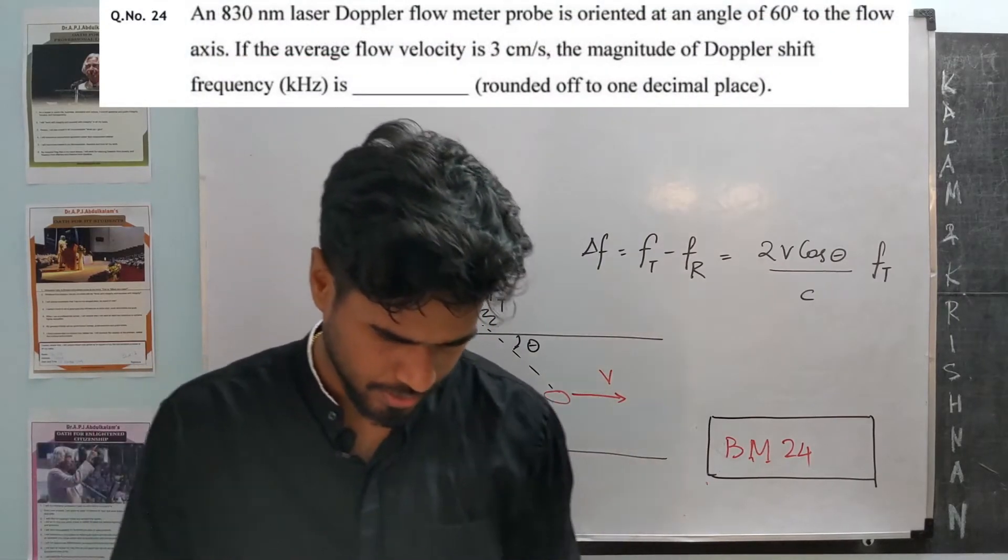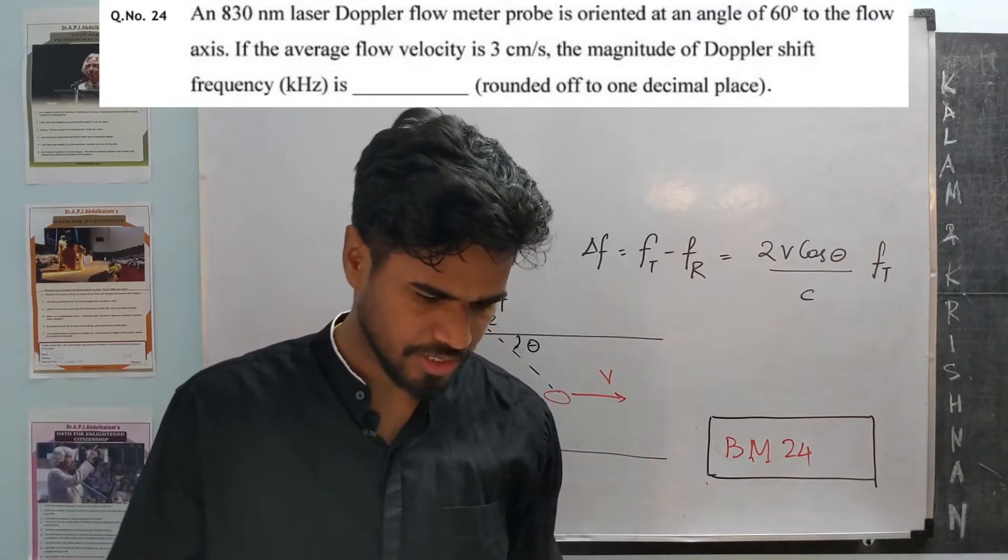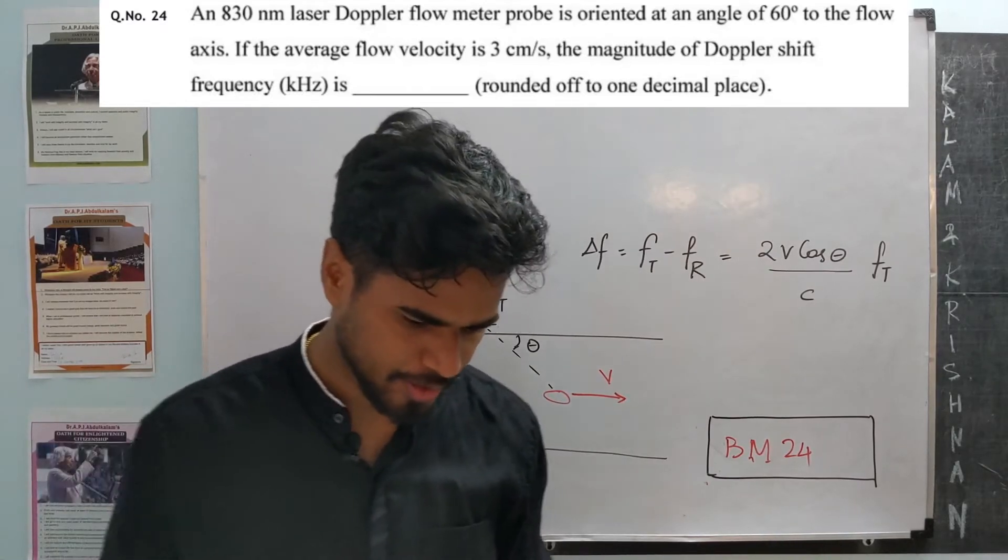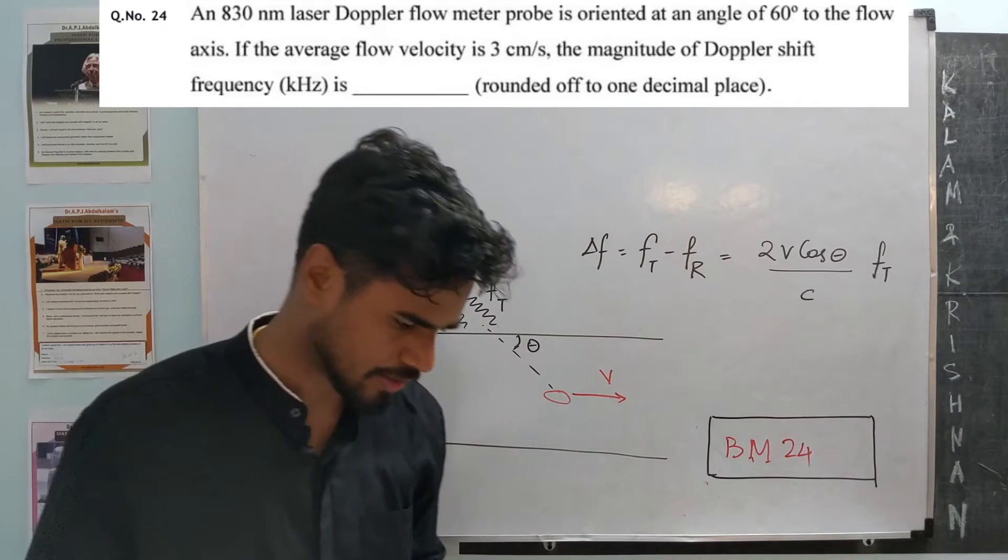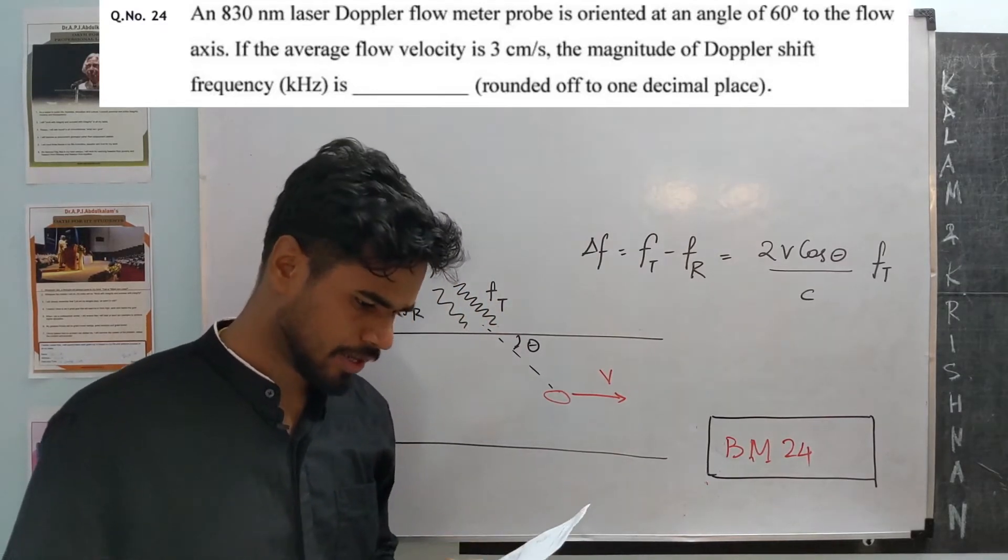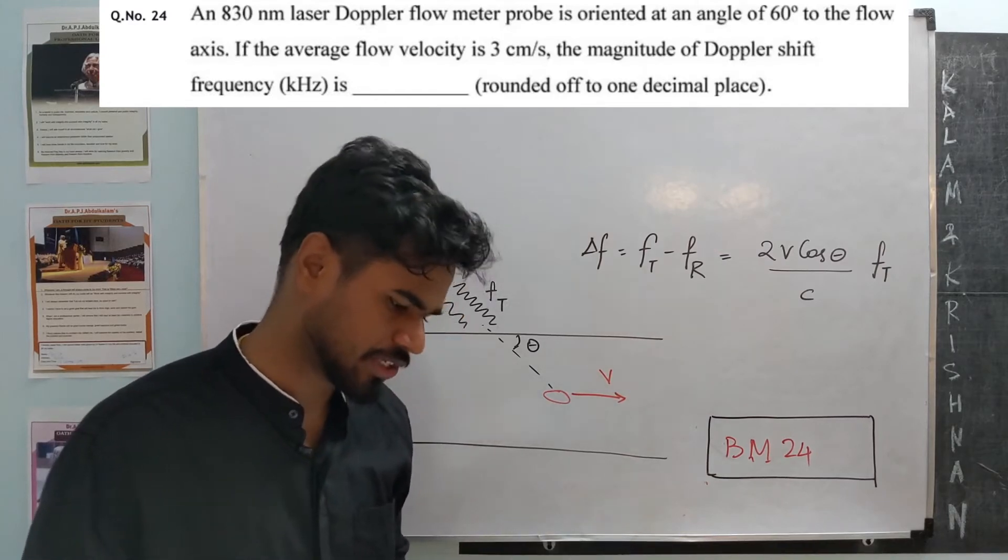Twenty-fourth question: an 830 nanometer laser Doppler flow meter probe is oriented at an angle of 60 degrees to the flow axis. If the average flow velocity is 3 centimeters per second, the magnitude of Doppler shift frequency is?